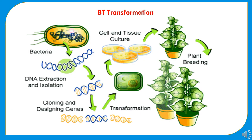The picture shown here represents the transformation of Bt into cotton plants. The bacteria's DNA is extracted and isolated, and after cloning and designing genes, it is transformed into the plants through cell and tissue culture. These plants contain the Bacillus thuringiensis gene in their cytoplasm and genetic content, which works against the American bollworm pest of cotton.